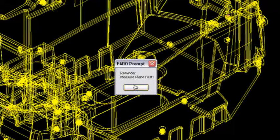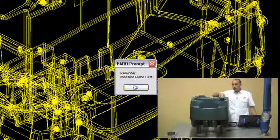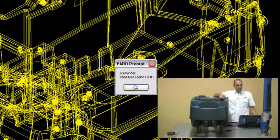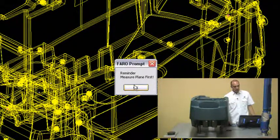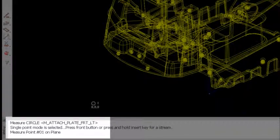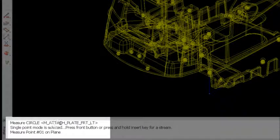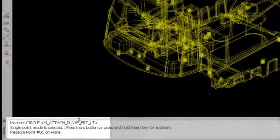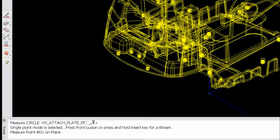Here's the next reminder that comes up: the bolts that I've measured are actually circles on defined planes. And it's going to say measure the plane first on all of these holes. So I'm going to say okay. Now what it's asking for in the bottom left is you've got the attach plate front left first. And it's going to take the points in the sequence that you've measured them. So I'm going to shoot that first, but I'm going to move my arm first.